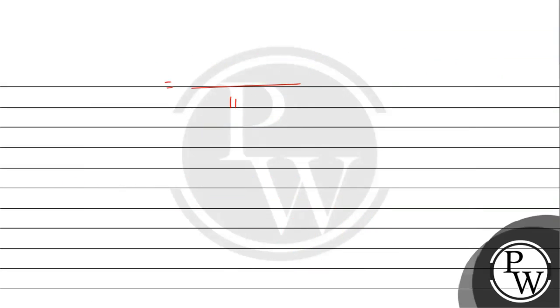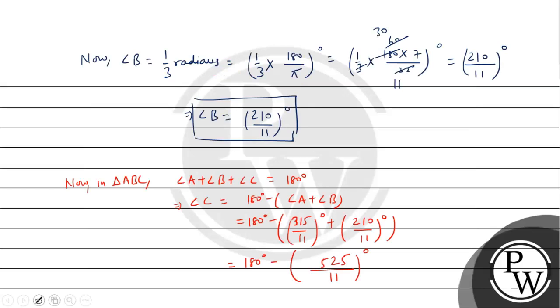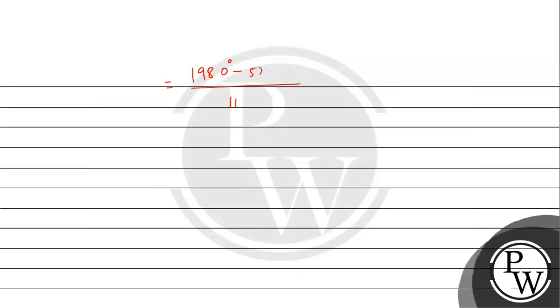11 into 180, 11 into 8, 88, 11 into 1, 11, 8, 19. 180 degrees minus 525 degrees. This is not a proper way to write it. This is the correct way to write it. This is the correct way to write it. Now, we will subtract 10 minus 5, 5. 7 minus 2, 5.